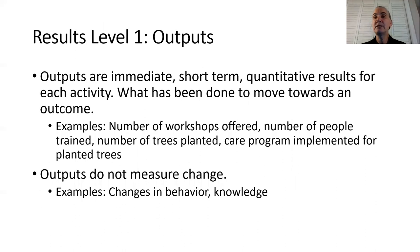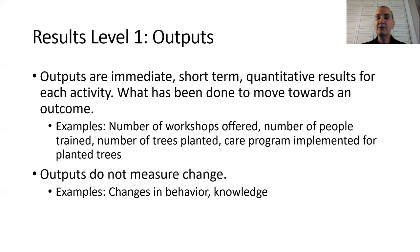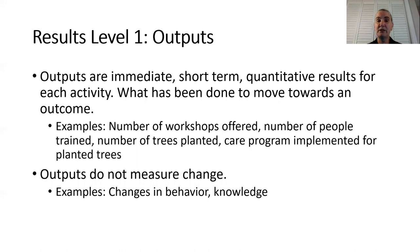Let's consider result level one: outputs. These are the immediate short-term quantitative results for each activity — it's what needs to be done to move towards an outcome. Examples include number of workshops offered, number of people trained, number of trees planted, and a care program implemented for planted trees. Note that outputs do not measure change, for example changes in behavior and knowledge.